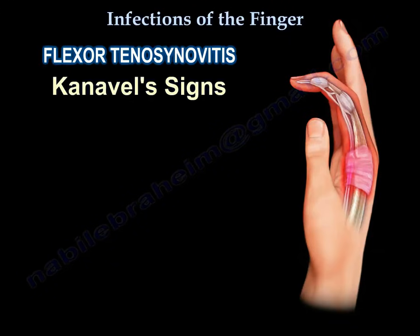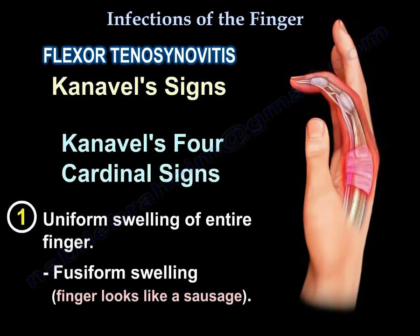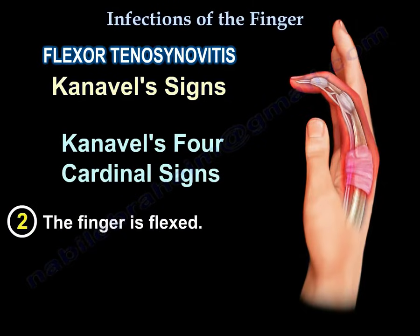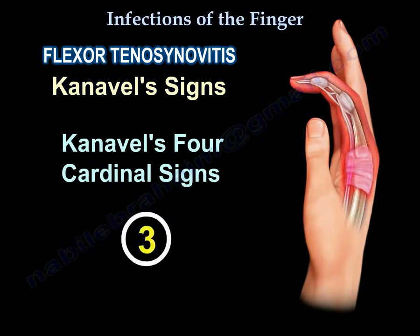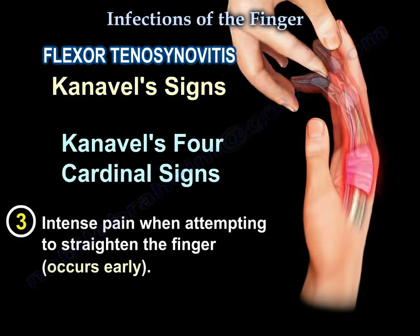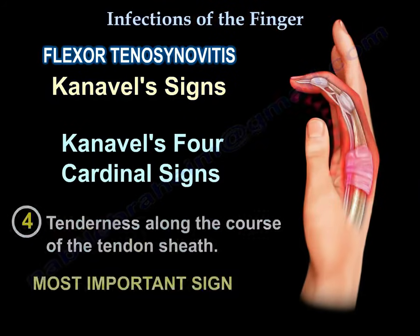The four cardinal Kanavel signs are: number one, uniform fusiform swelling of the entire finger — the finger looks like a sausage; number two, the finger is held in flexion; number three, intense pain when attempting to straighten the finger, which occurs very early; and number four, tenderness along the course of the tendon sheath — this is the most important sign.